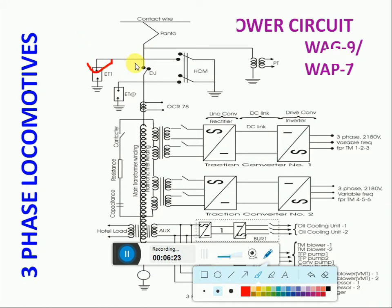ET1 is connected before VCB and ET2 is connected after VCB. Any surge voltages before VCB closing will be grounded through ET1; any surge voltages after closing of VCB will be grounded through ET2. The HOM is a grounding switch used for climbing on the loco roof to attend any problem. We have to inform TPC, PRD staff will come, they will take the power block, and we have to secure the loco and ground it along with PRD staff.